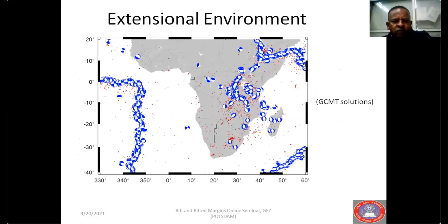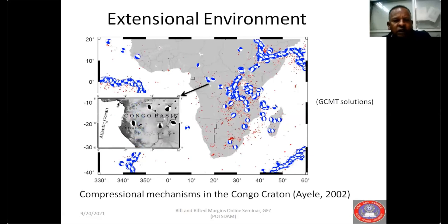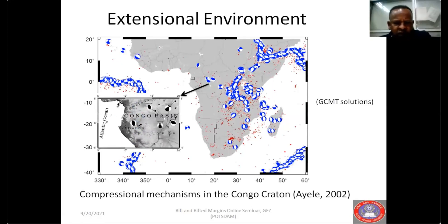In general, the mode of deformation in the East African rift system is extensional, as shown by global focal mechanism solutions displayed on this map. But in the Congo Basin, there is also some consistent thrust faulting shown by these events — a published work from around 2002. Elsewhere along the East African rift you may find strike-slip events or thrust faults, but statistically those are insignificant.